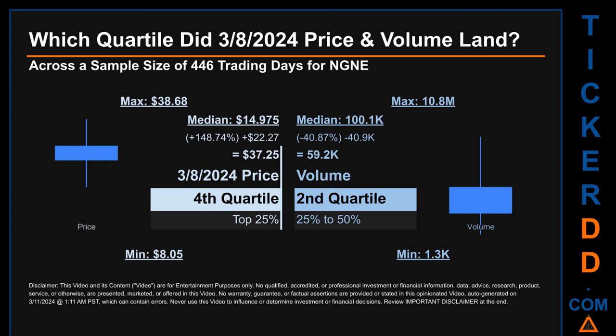Hello, my name is Maria. Which quartile did March 8, 2024 price and volume land in, across a sample size of 446 trading days? The maximum end-of-day price for NGNE was $38.68 while the minimum was $8.05. Within that range, the March 8, 2024 price of $37.25 landed within the fourth quartile, meaning it was within the top 25% of all sampled end-of-day prices. The day's volume landed within the second quartile, that is, within the 25% to 50% range of all sampled daily volume, which saw a max daily volume of 10.8 million and a minimum of 1,300.